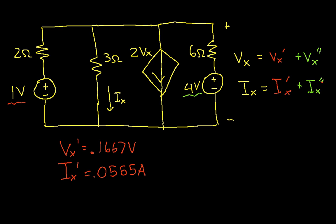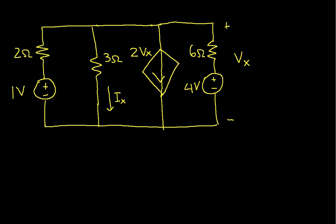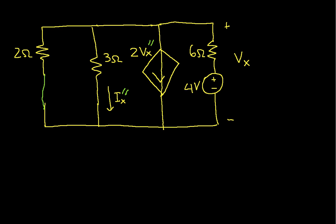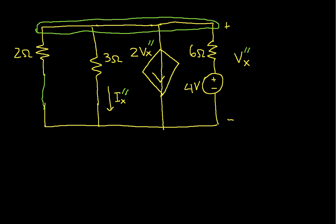Next, we eliminate the 1 volt source and find Vx double prime and Ix double prime from the 4 volt source. We bring up a clean copy with the 1 volt source removed. This is Ix double prime and this is Vx double prime. Applying KCL at the top node: the current through the 2 ohm resistor is Vx double prime over 2 ohms, and through the 3 ohm resistor — which is Ix double prime — is Vx double prime over 3 ohms.